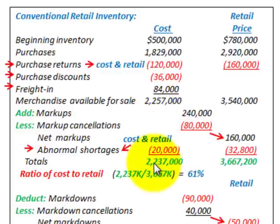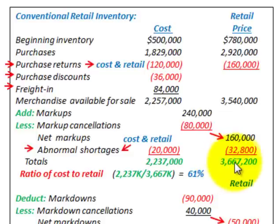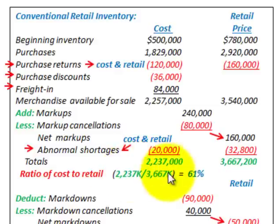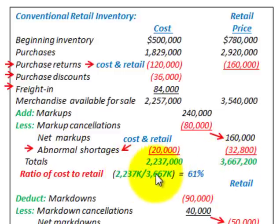Summing the columns, we get a total cost of $2,237,000 and a total retail price of $3,667,200. We can now determine our cost-to-retail ratio by dividing total cost $2,237,000 by total retail $3,667,200, which gives us a ratio of 61%.